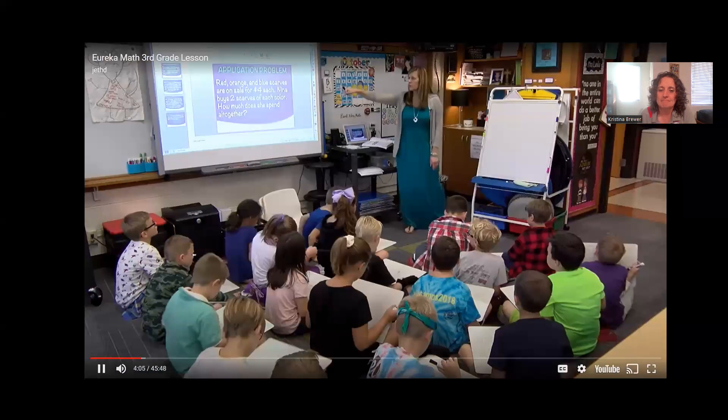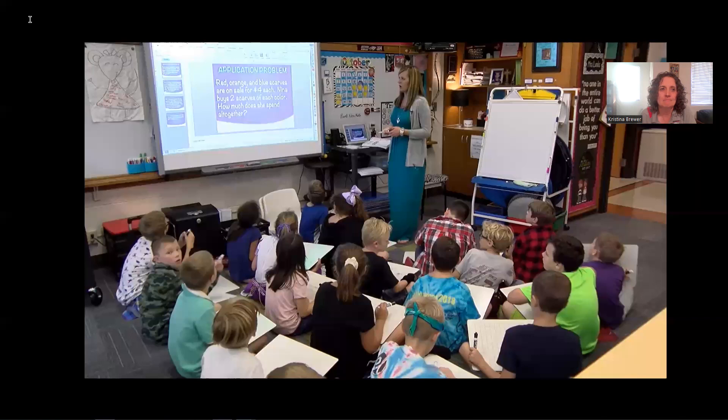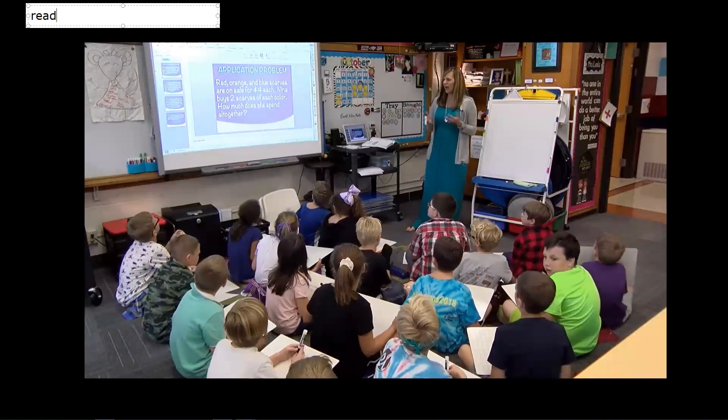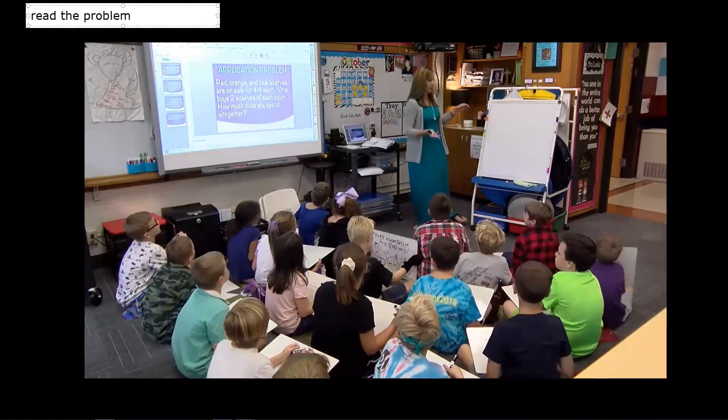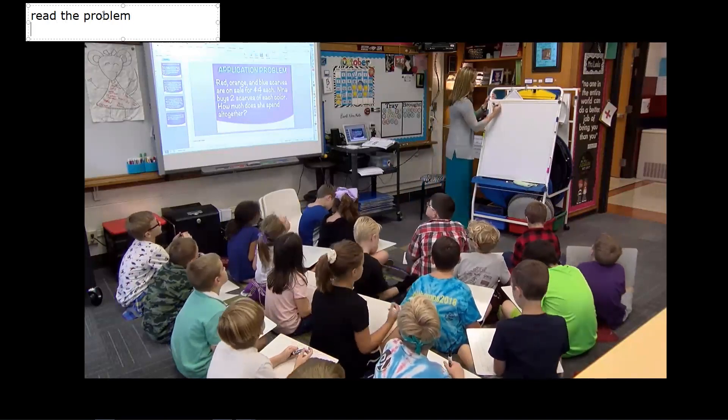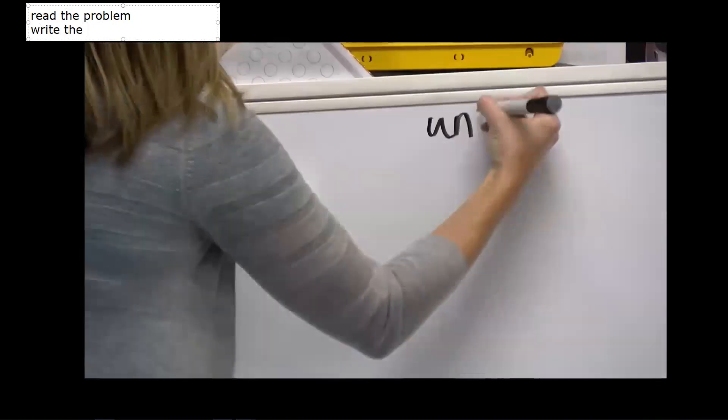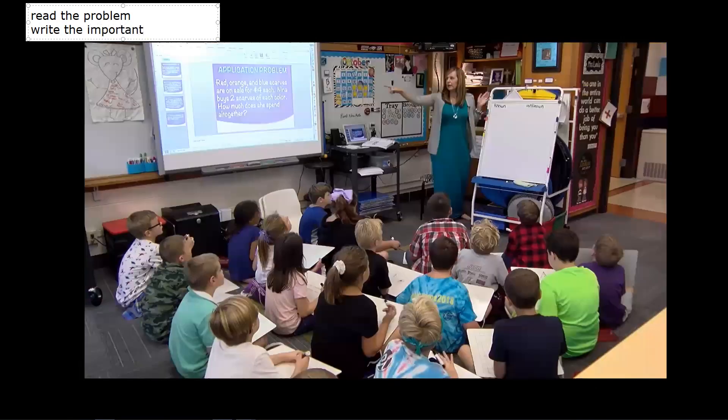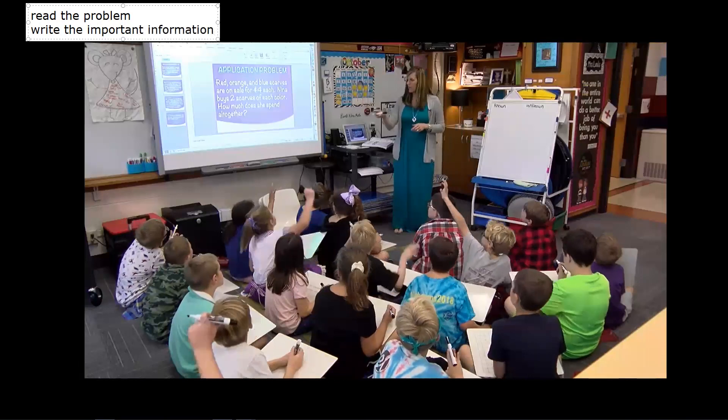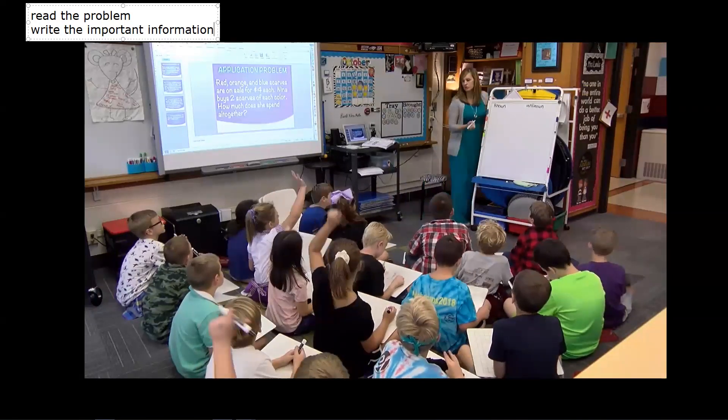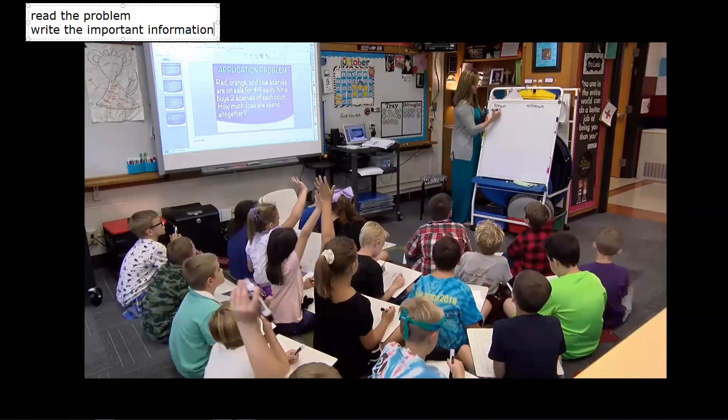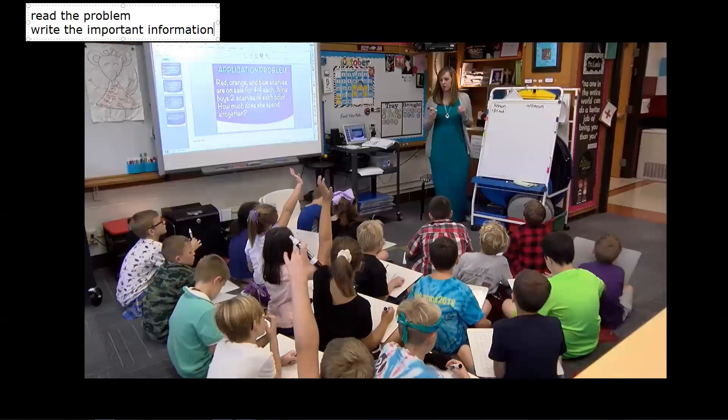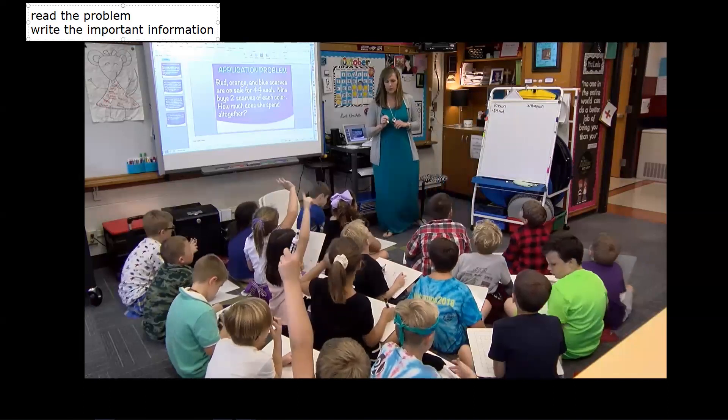So let's read this again. Red, orange, and blue scarves are on sale for $4 each. Nina buys two scarves of each color. How much does she spend all together? So the first thing we've learned to do is figure out our known information and our unknown information. We've been doing that for a while now. Known and unknown. Give me a piece of known information from this problem, please. Kiana? $4 each. $4 each. What are $4 each? Scarves. $4 each. We're used to having how many pieces of known information? Two. Two, and how many pieces of unknown information? One. One. That's going to change just a little bit today.